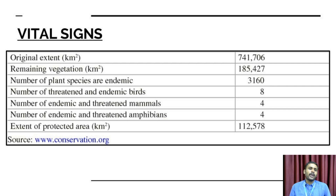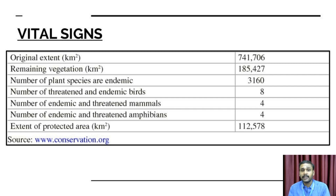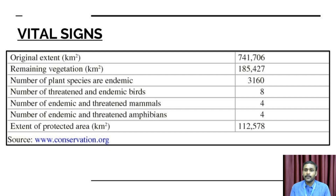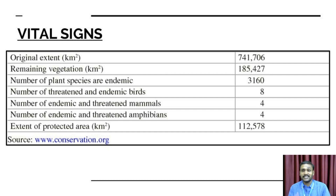Looking at the vital signs for the Himalayan hotspot: remaining vegetation, number of plants, and threatened endemic species. Around 8 bat species are in very dangerous situations, 4 mammal species, and 4 amphibian species are critically threatened. The extended protected area is around 1,12,000 km², but we need 600 times more protection.